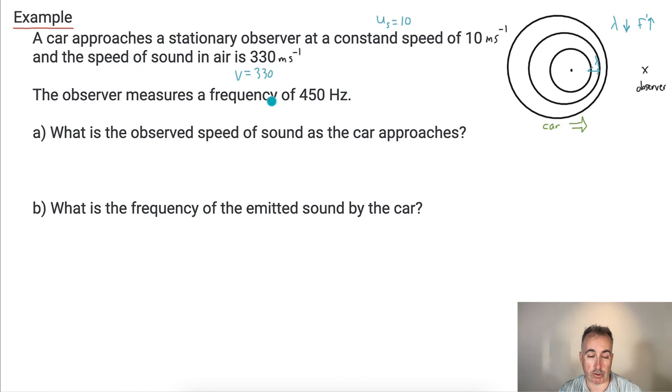And the observer measures a frequency. What's that that we just found? Measured frequency is actually F prime. So I know that that's 450 hertz. This is really helpful just to find out what do we know. So this first question right here says, what's the observed speed of sound as the car approaches?